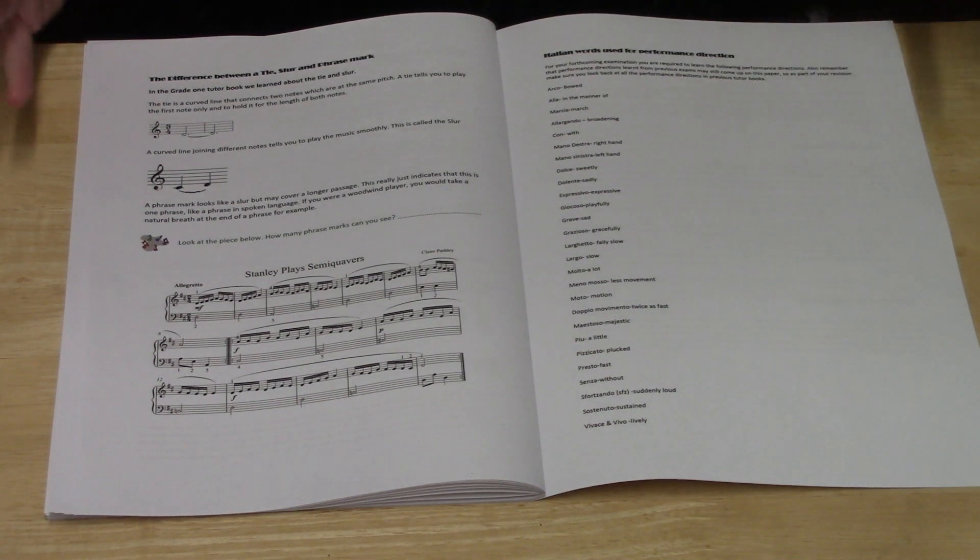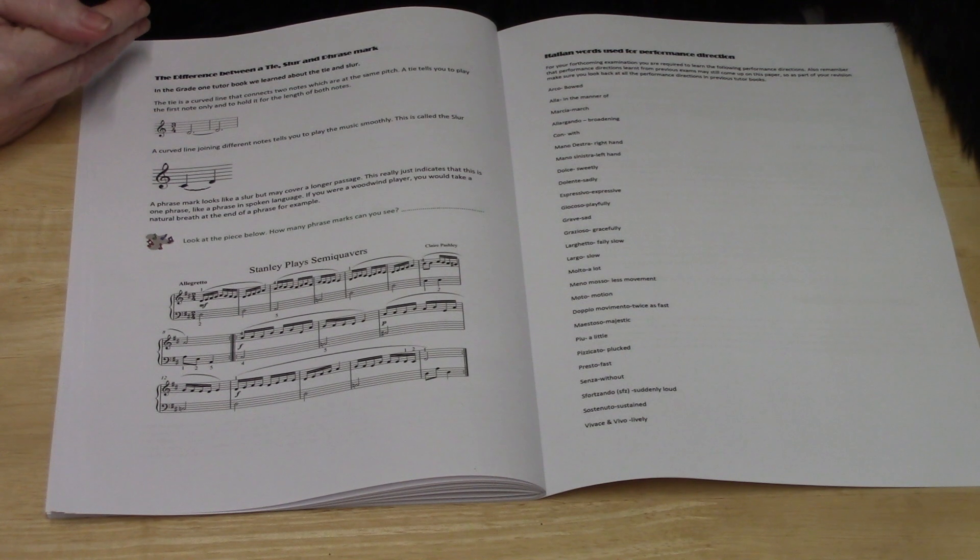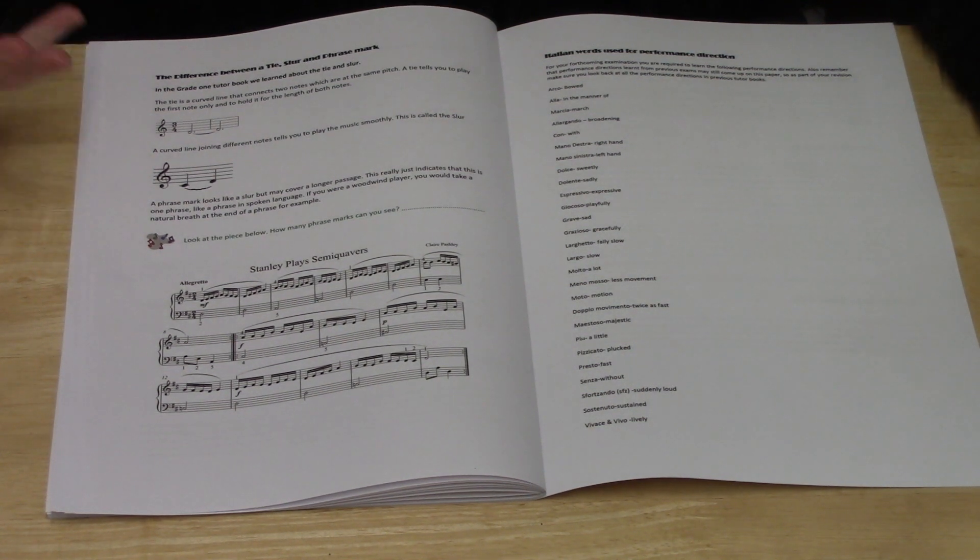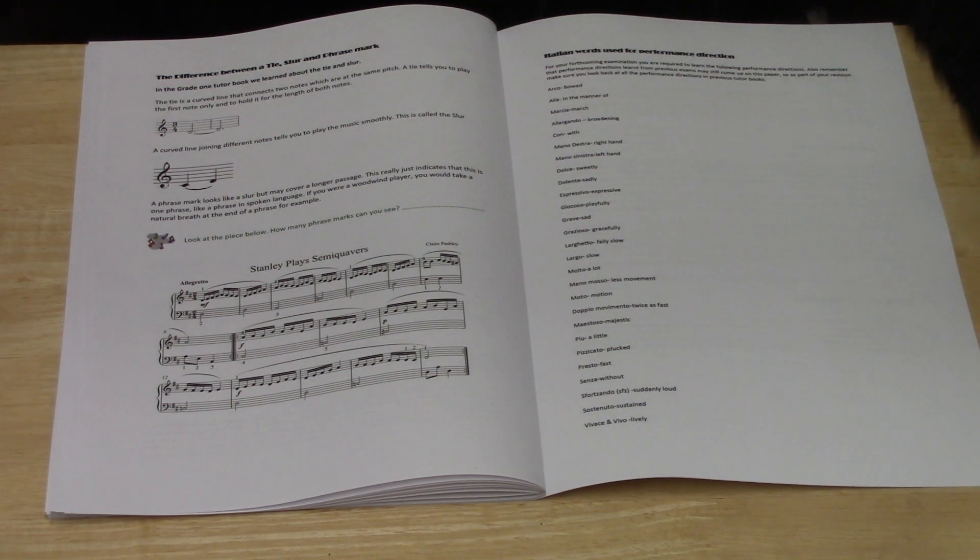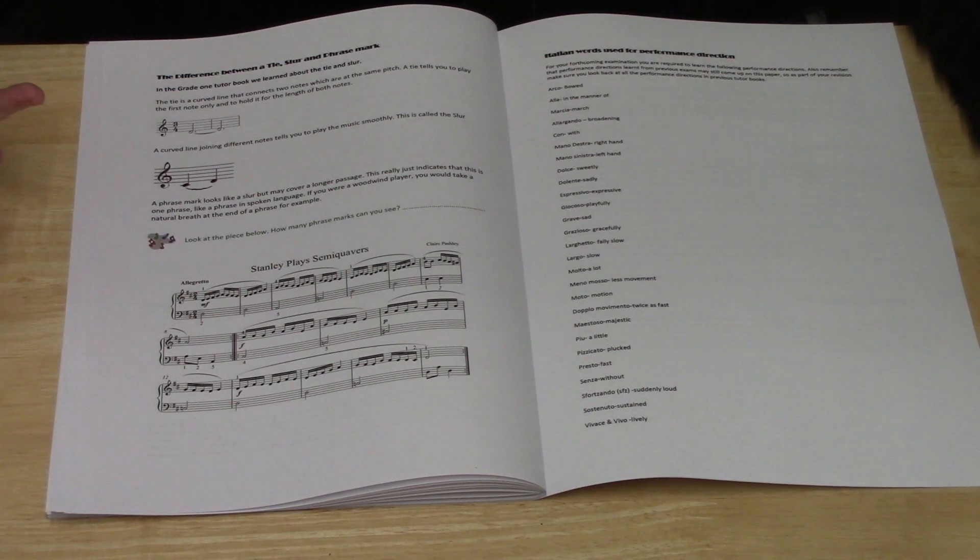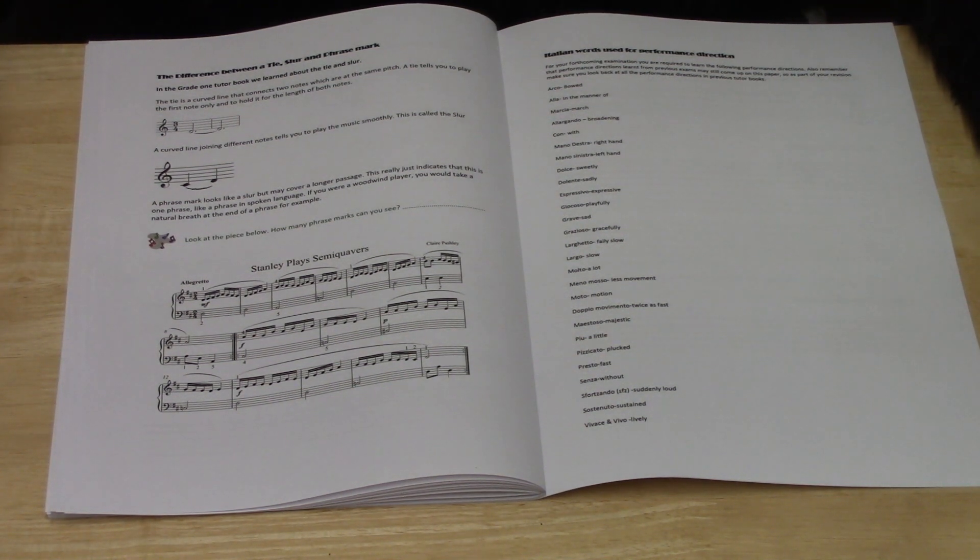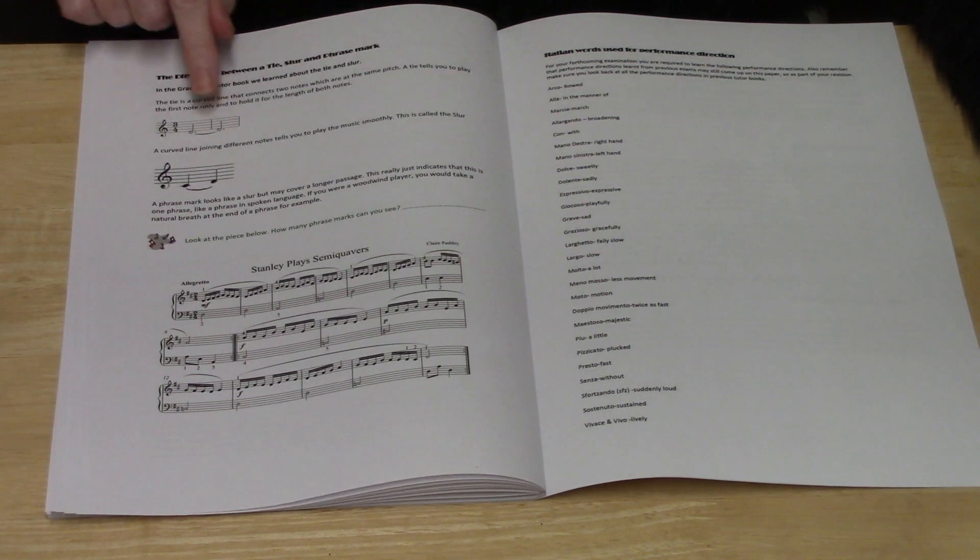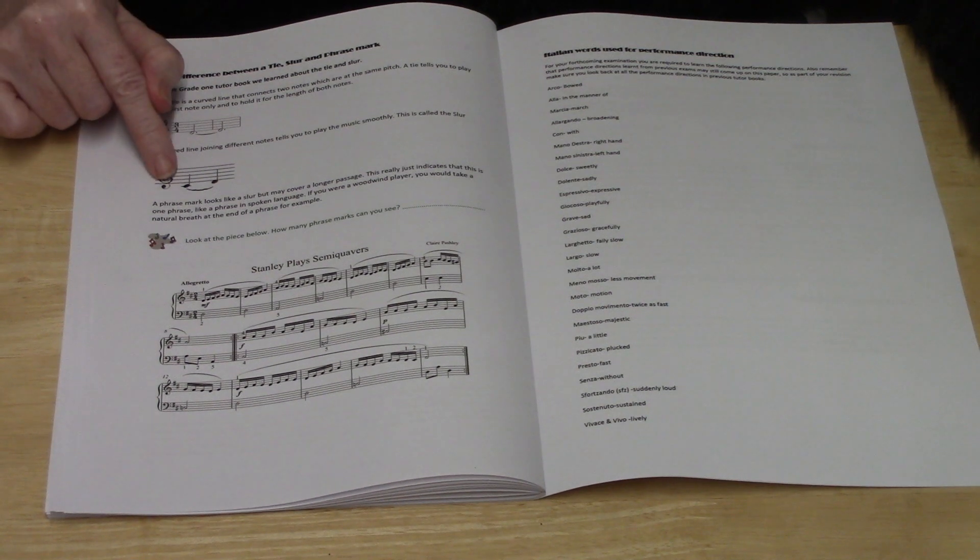Then there's a discussion on what the difference is between a tie, a slur and a phrase mark. We covered quite extensively the difference between a tie and a slur in the Grade 1 book, but now we're going to join the phrase mark into this. Here's your tie joining the same note, here's your slur joining a different note.